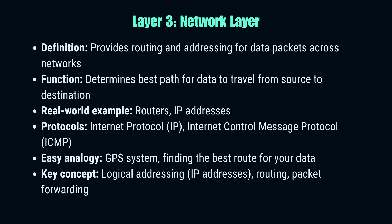The network layer is the internet's traffic director. While the data link layer handles communication between directly connected devices, the network layer determines how data is sent between devices on different networks — this is where IP addresses come into play. The network layer figures out the best path for your data to travel, even if it has to hop across multiple networks. Routers operate at this layer, using protocols like IP (Internet Protocol) and ICMP (Internet Control Message Protocol). Key concepts include logical addressing, routing, and packet forwarding.